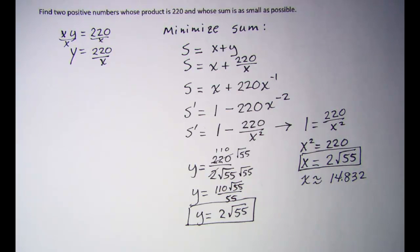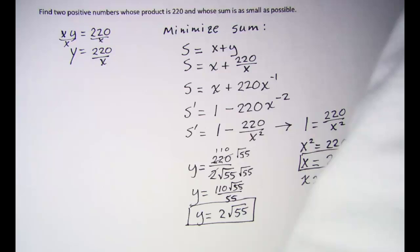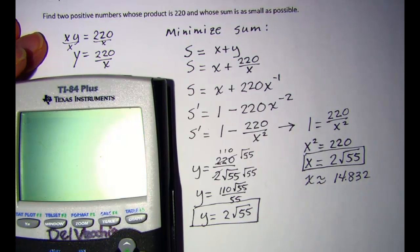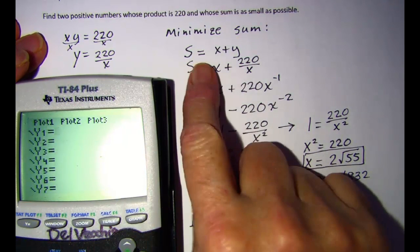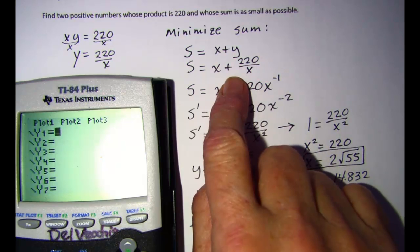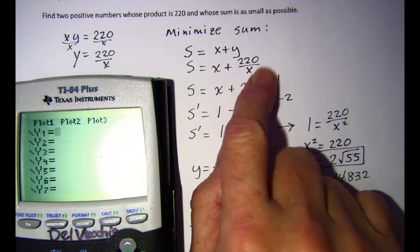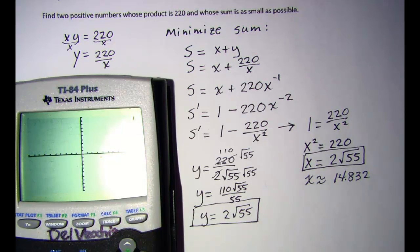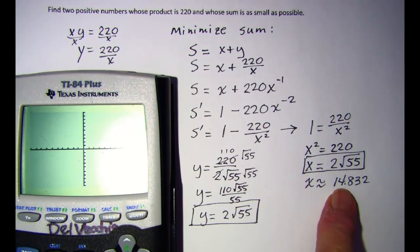Now we can check ourselves using a graphing calculator. What we want to do is enter the expression that we're going to minimize, but we need to use the one with the same variable. So enter x plus 220 divided by x into the calculator and look at the graph. It looks like our x value needs to be about 15.